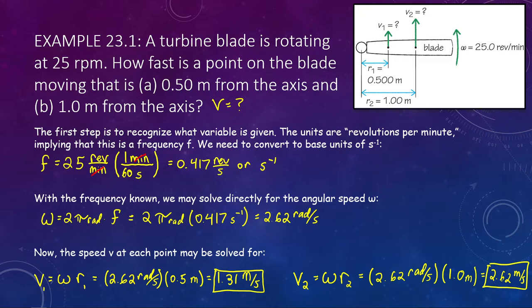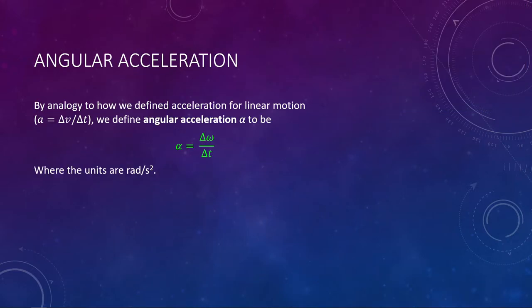We've defined angular position and angular speed, just like we defined position and speed at the start of the course. After regular speed, we introduced acceleration — so now we introduce angular acceleration. In the past, regular acceleration was a change in velocity over a change in time. Similarly, angular acceleration, given by the Greek letter alpha, is a change in angular velocity over a change in time: alpha equals delta omega over delta t.